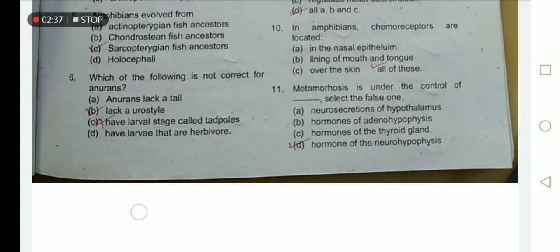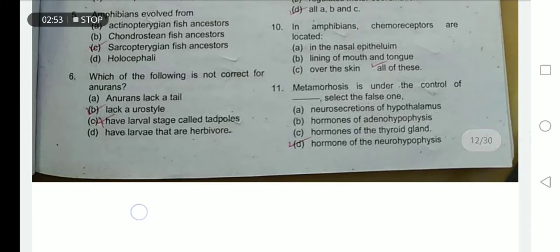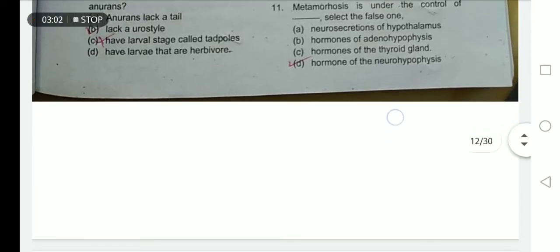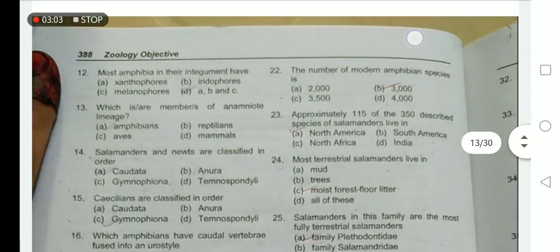Anura larvae are herbivores — this is true. Regarding metamorphosis, neurosecretions from the hypothalamus control metamorphosis — true. Hormones of the adenohypophysis control metamorphosis — true. Hormones of the thyroid gland control metamorphosis — true. However, hormones of the neurohypophysis do not control metamorphosis, so that is the incorrect/false option.